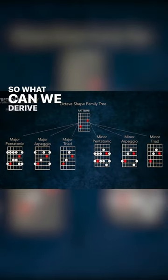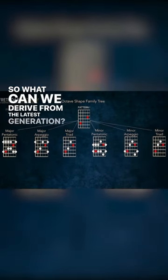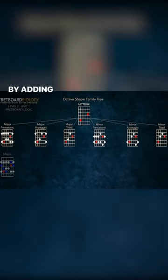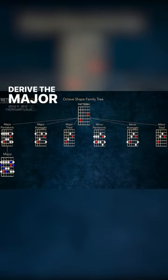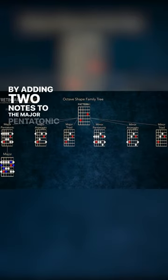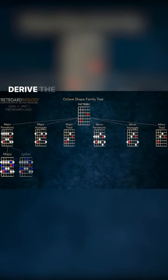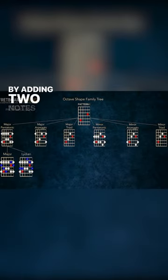So what can we derive from the latest generation? By adding two notes to the major pentatonic scale, we can derive the major scale. By adding two notes to the major pentatonic scale we can derive the Lydian scale. By adding two notes to the major pentatonic scale we can derive...